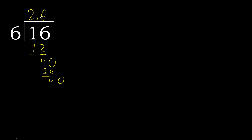0. Point is here. 40. 6 multiplied by 6 is 36. Subtract. Complete — here.